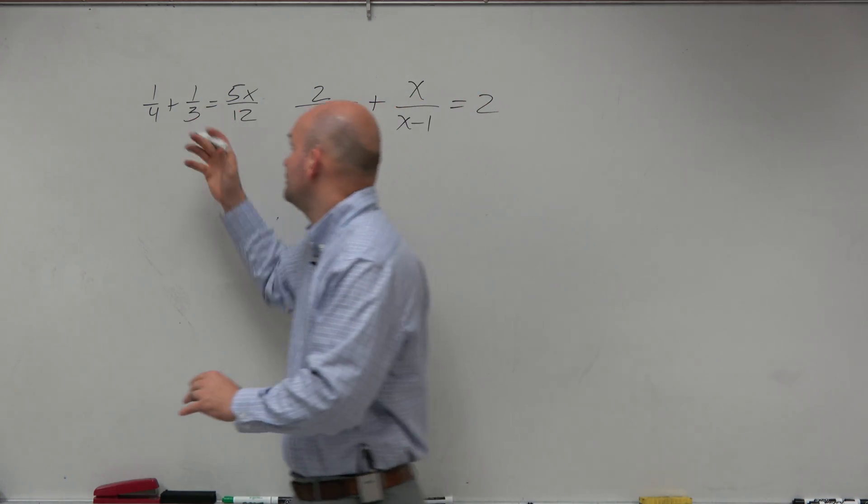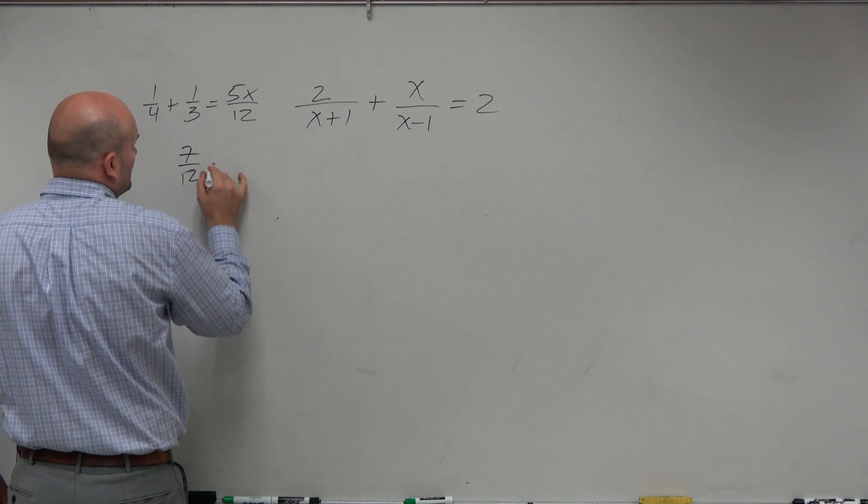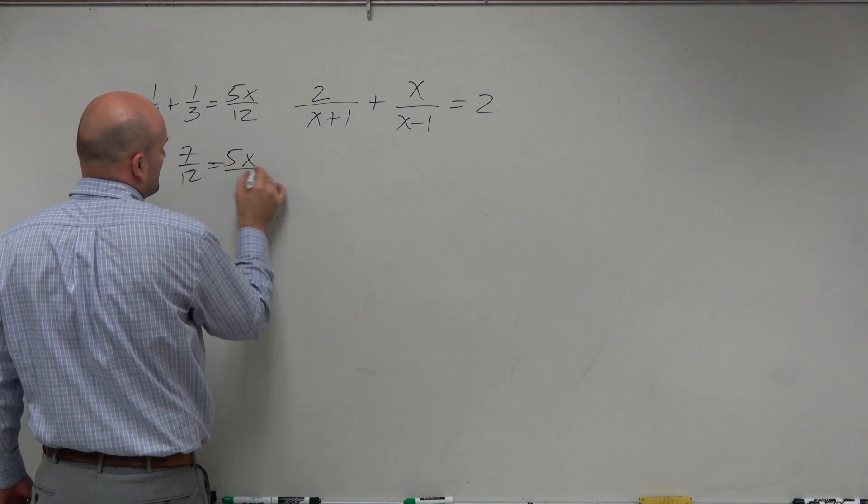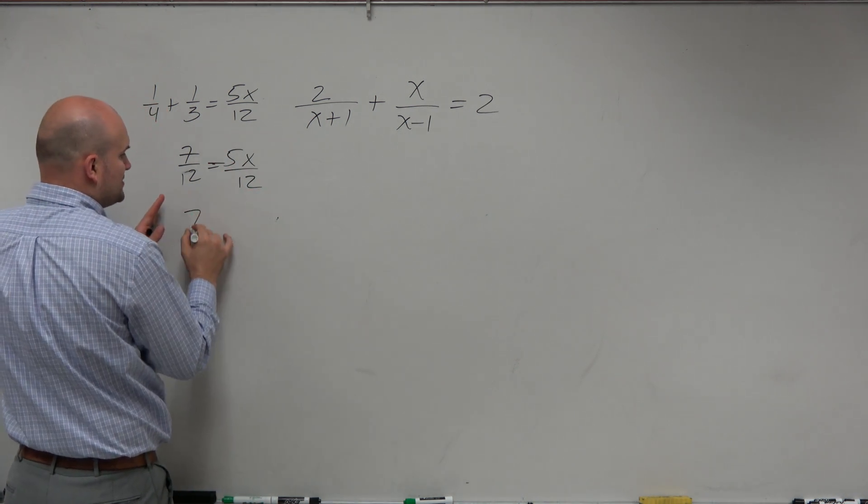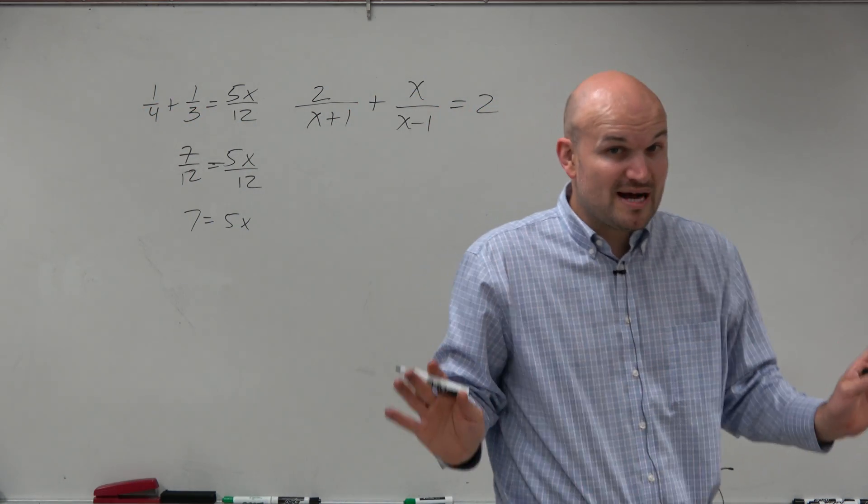You could do that. I mean, you'd get these, and you'd get 7 12s equals 5x over 12. Since I have the same denominators, you could do 7 equals 5x. Or you could cross multiply and solve for x. That's possible.